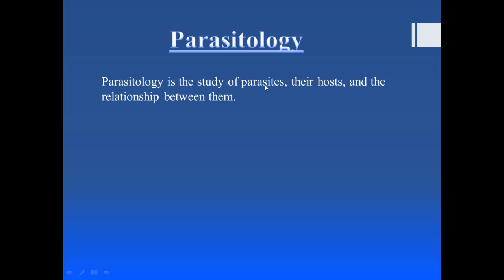We will study where a parasite mainly causes disease, in which morphological form it is present, how it is diagnosed, and its different forms. That is the study of the parasite. After that, we study their host — which host the parasite lives in or on — and then the relationship between them, mainly the various diseases the parasite causes in its host. This is the scope of parasitology.